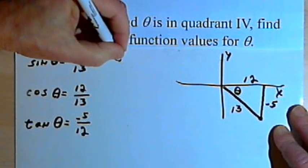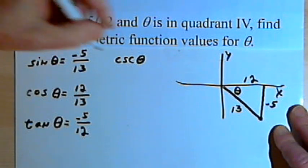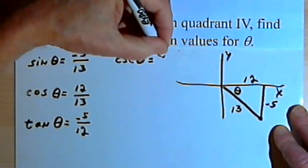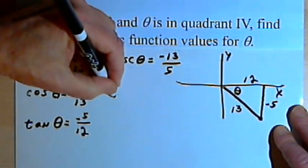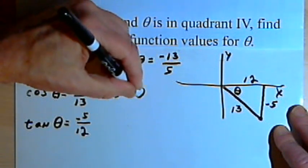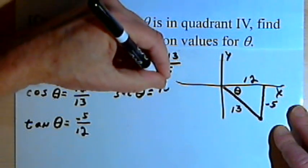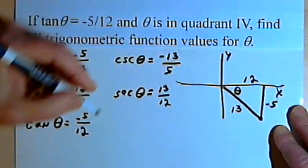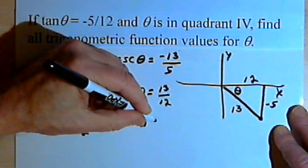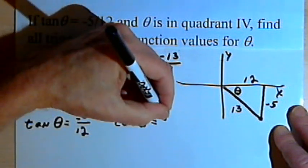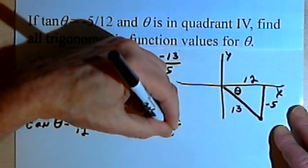And then we have the cosecant of theta, that's just the reciprocal of the sine, so that will be, I'll put the negative sign in the numerator, negative 13 over 5. The secant of theta, the reciprocal of the cosine, is going to be 13 over 12. And the cotangent, the reciprocal of the tangent, is going to be, once again, I'll put the negative sign in the numerator, negative 12 over 5.